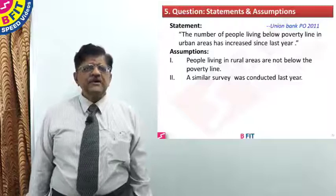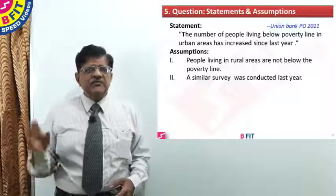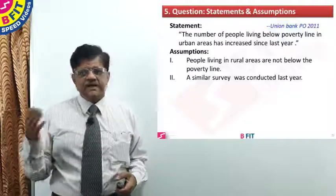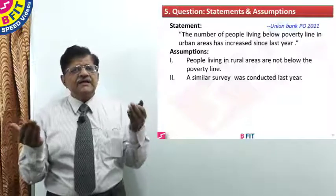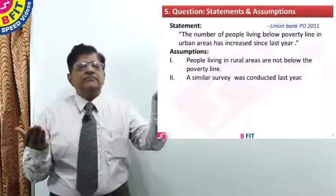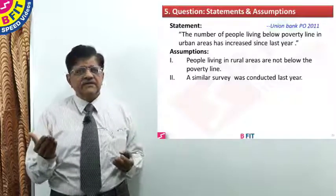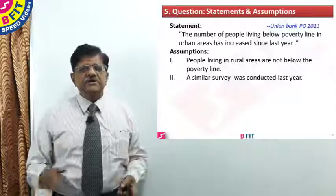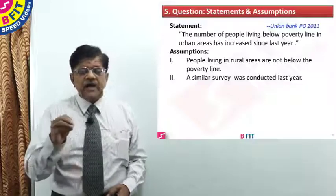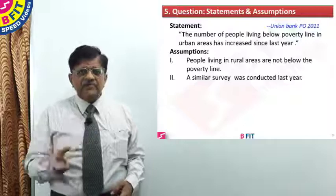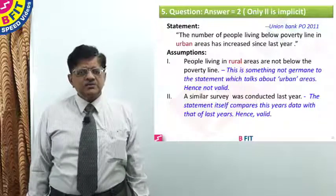For assumption two: a similar survey was conducted last year. The statement says the number of people living below poverty line in urban areas has increased since last year. How do they know? They have data for last year and the current year, they compared both, and concluded the number has gone up. This is only possible if a survey was conducted in both years. Therefore, a similar survey was conducted last year is a valid assumption. Only assumption two is implicit, so the correct answer is option two.